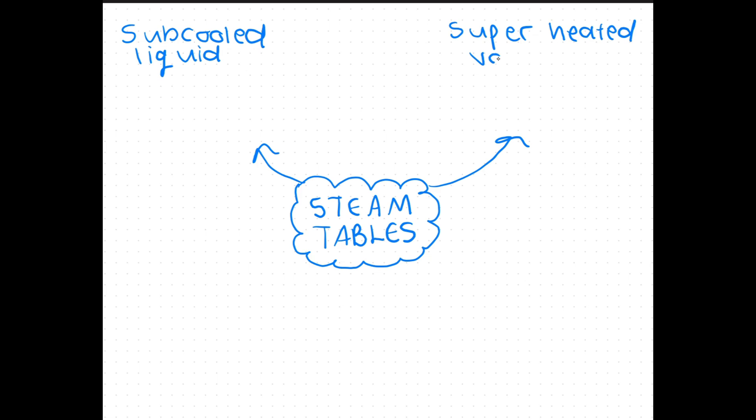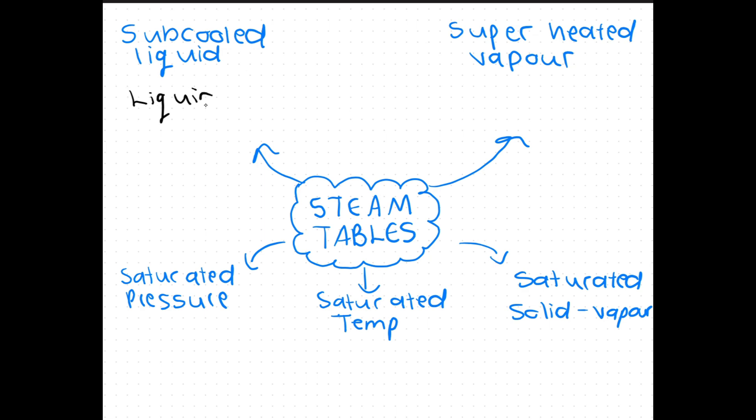The subcooled liquid table, the superheated vapor table, the saturated pressure table, saturated temperature table, as well as the saturated solid vapor table. The different tables are at different phases: liquid phase and superheated vapor phase. And the saturated tables are mixtures with phases vapor liquid and solid vapor.